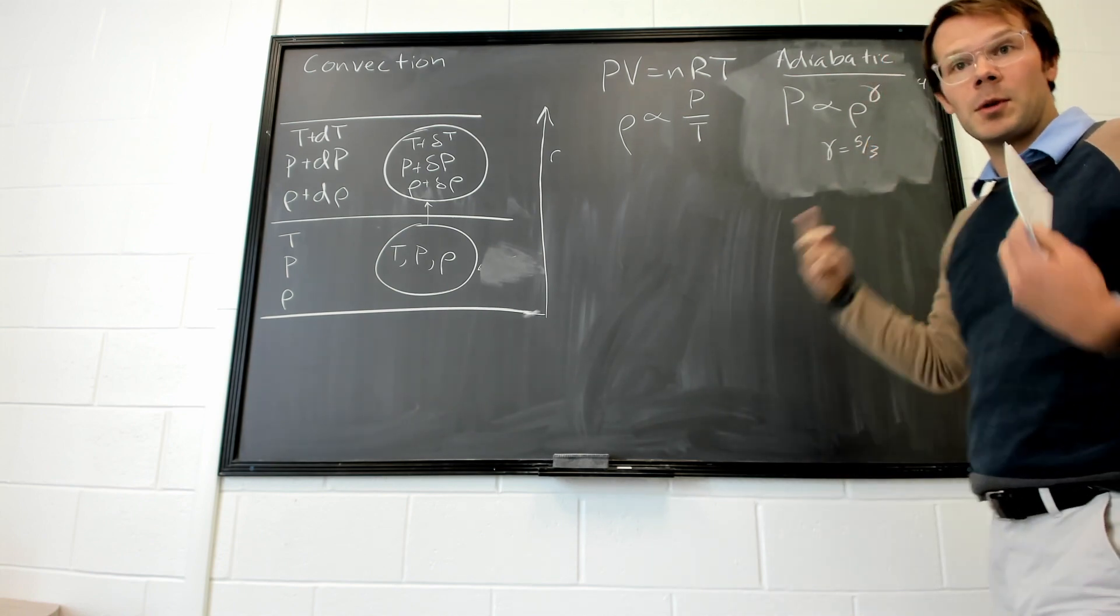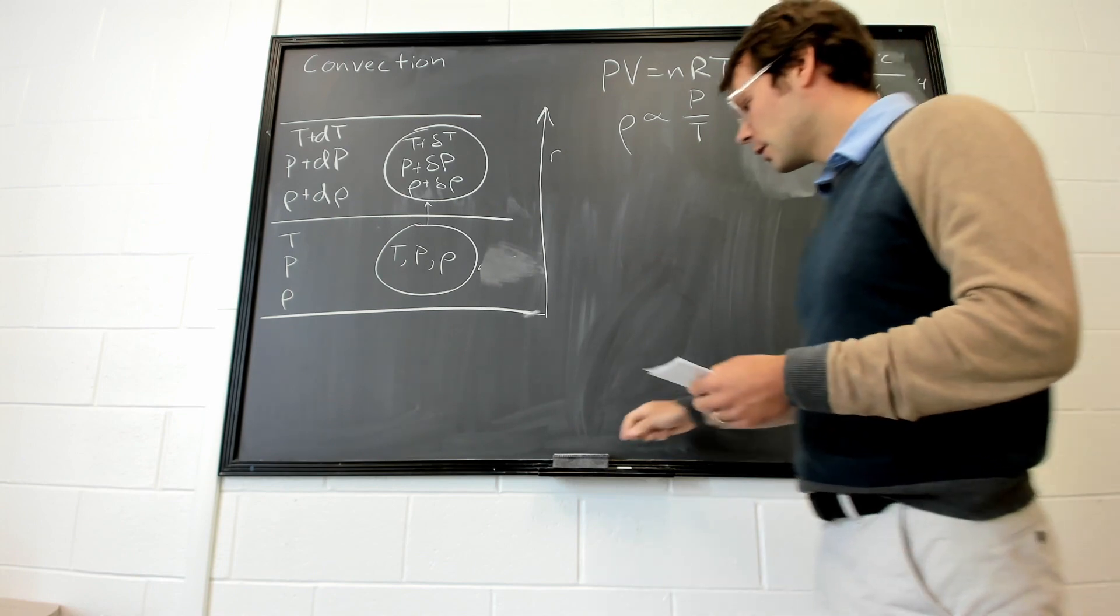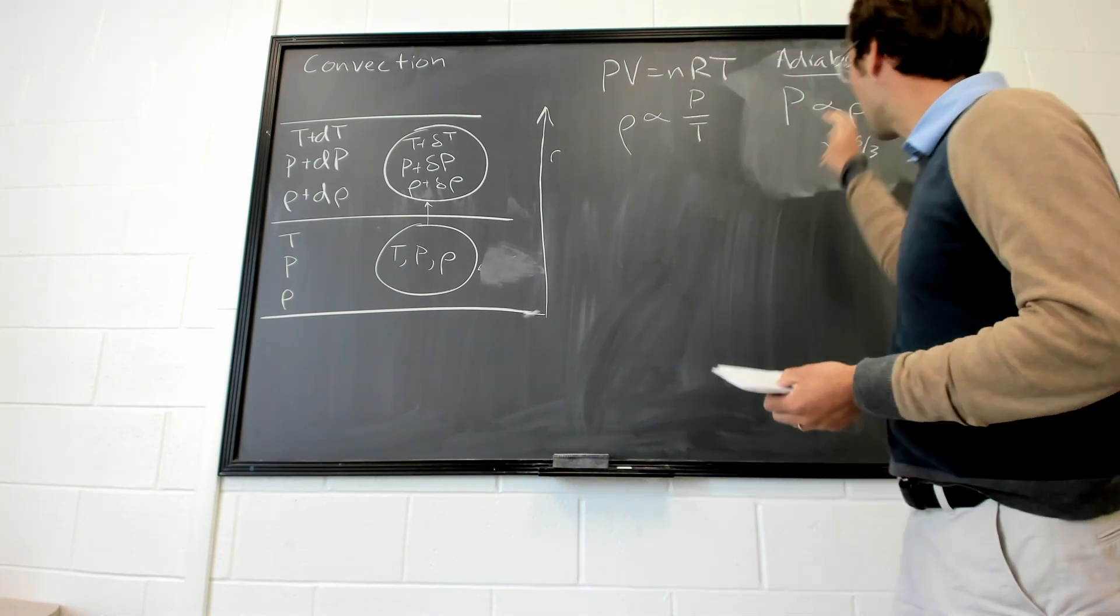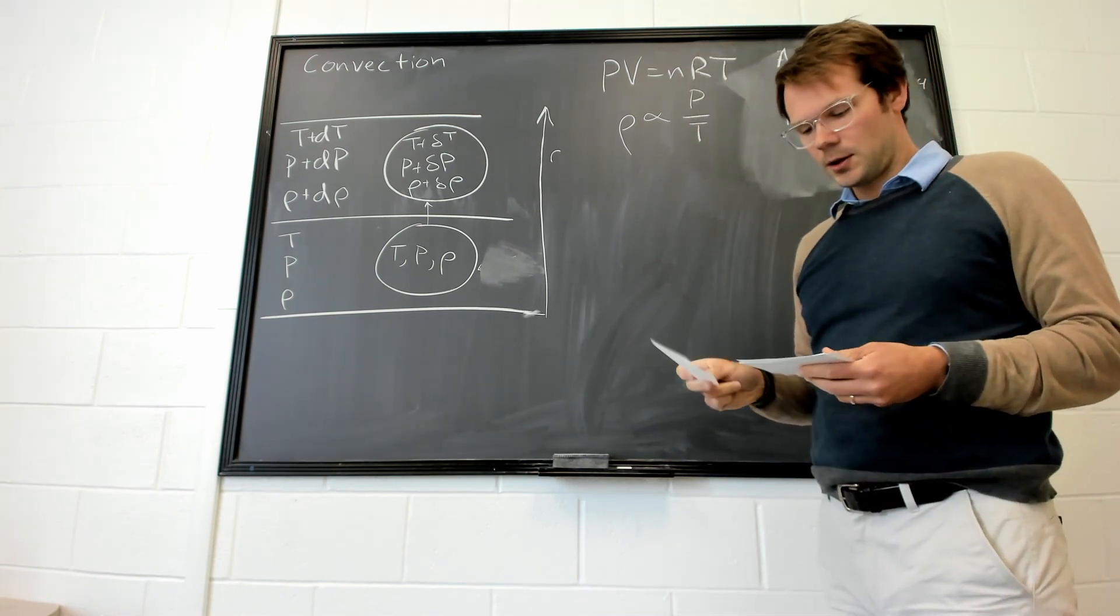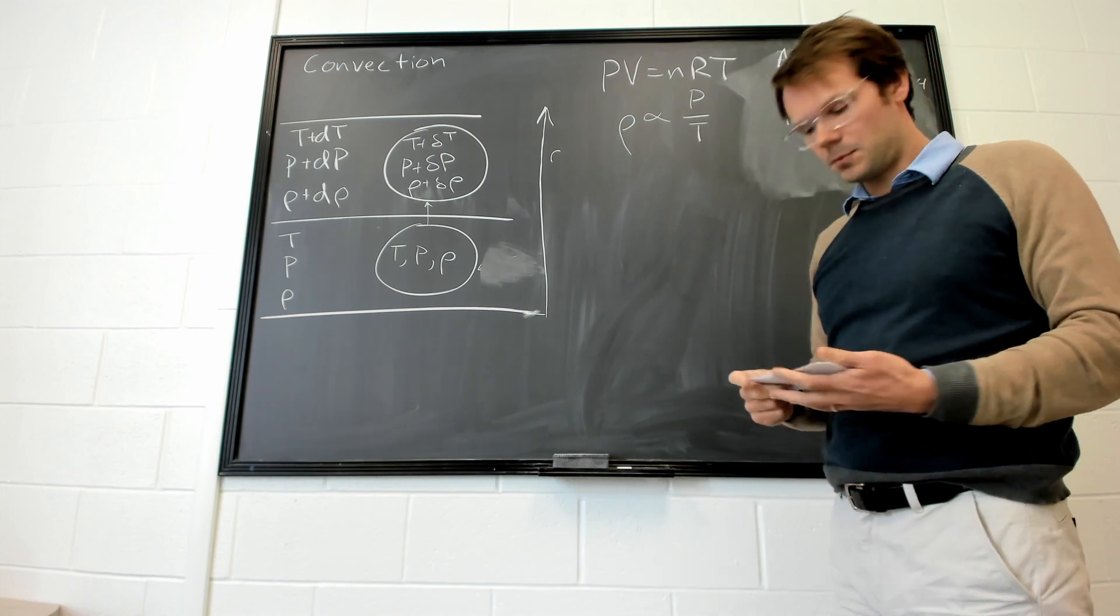And it's different for different gases. So for an ideal monoatomic gas, gamma is five-thirds. But for something like air, it might be a lower value. And so it depends on the type of gas being processed.